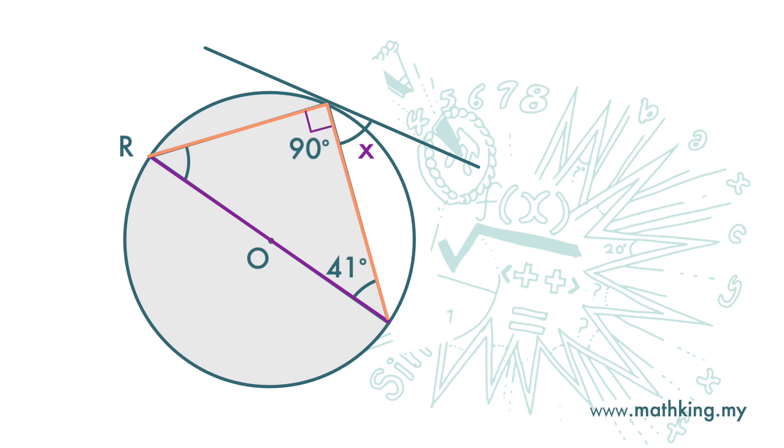Look at this triangle. We have 90 degrees and 41 degrees, so angle r is 180 minus 90 minus 41, which equals 49 degrees. Since x equals this angle, x is also 49 degrees.